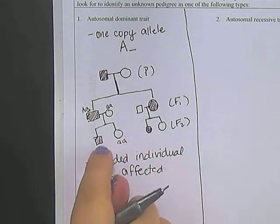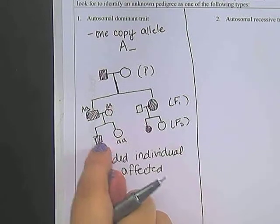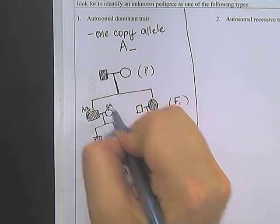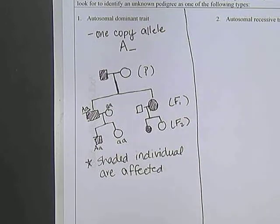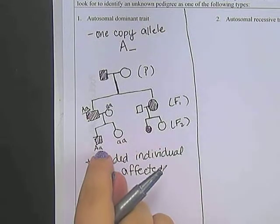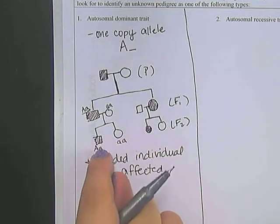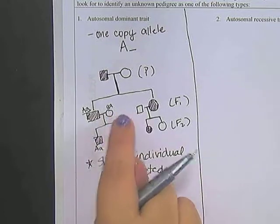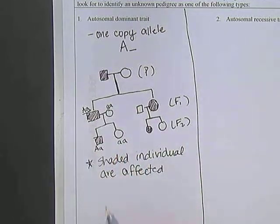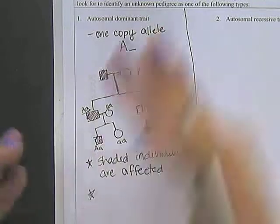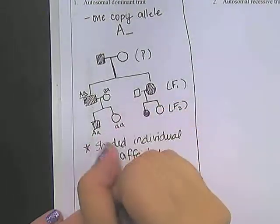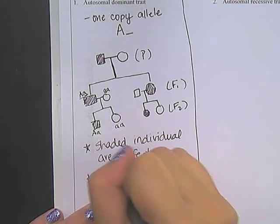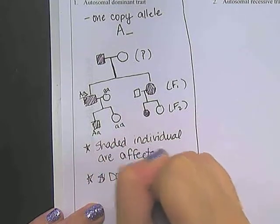So then we would also know that this individual had to inherit one of the a's from his mother, and inherited the big A from the father. That's the only way that this person could be, the only option that this could be is heterozygous, because they didn't inherit a large A from the mother. So when you're looking at these, if you want to identify something as autosomal dominant, it doesn't skip generations. That's one of the things that you look for.